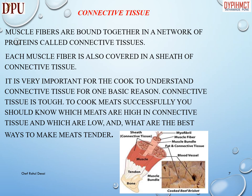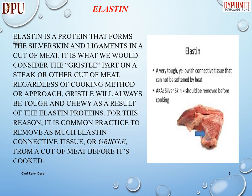Connective tissue: muscle fibers are bound together in a network of proteins called connective tissues, and each muscle fiber is also covered in a sheath of connective tissue. It is very important for the cook to understand connective tissue for one basic reason — connective tissue is tough. To cook meat successfully, you should know which meats are high in connective tissue and which are low, and what are the best ways to make meats tender.